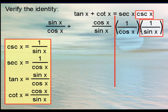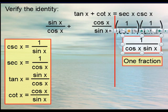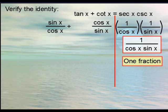On this right hand side if we clean this up we get one over cosine times sine. Which you'll notice is just one fraction. So again that's a hint in what to do. We need to take these two fractions on the left hand side and combine them to make one fraction. That means we'll need to get a common denominator.